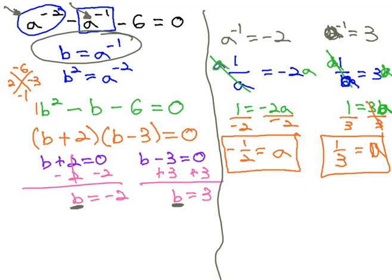And that gives us our two solutions, a is negative 1 half and a is 1 third.